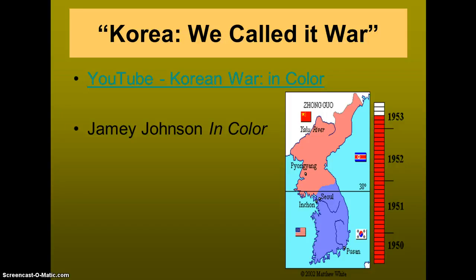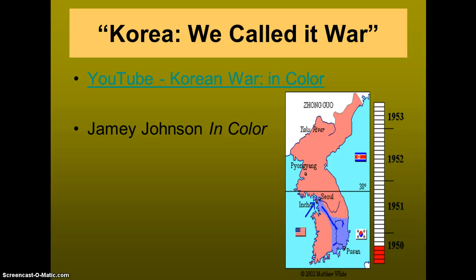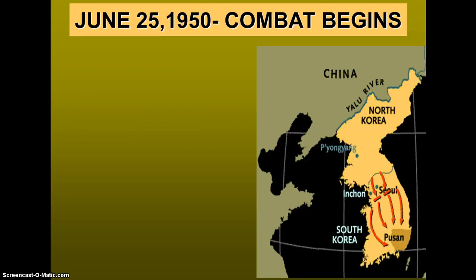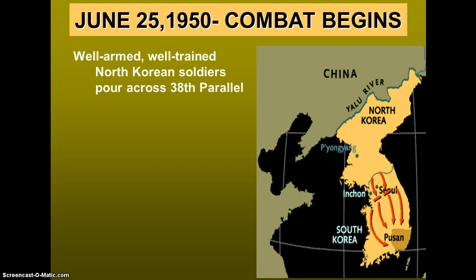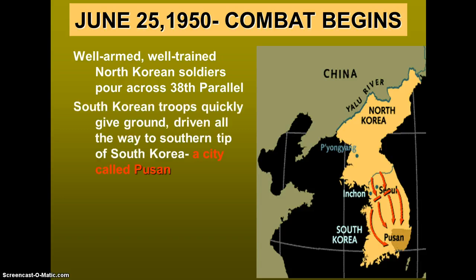Tension began to mount as the Soviet Union provided military aid to the North Koreans, who quickly built up an army. On June 25th, 1950, North Korean troops invaded the south, driving back the poorly equipped South Korean forces. As they crossed over the 38th parallel, the South Koreans quickly had to retreat, going all the way back to the southern part of the peninsula — a port city called Pusan.